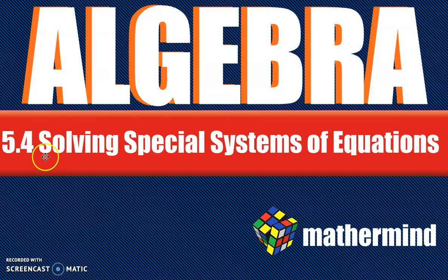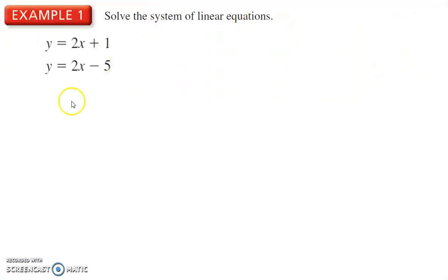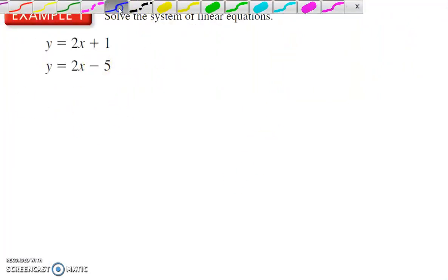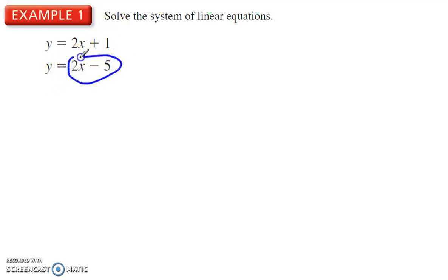Back in Algebra Chapter 5, Section 4: Solving Special Systems of Equations. Here we have a system of equations where both are already solved for y, so that lends itself to substitution. I can take this and plug that in for y up here, so then I'd have 2x + 1 = 2x - 5.